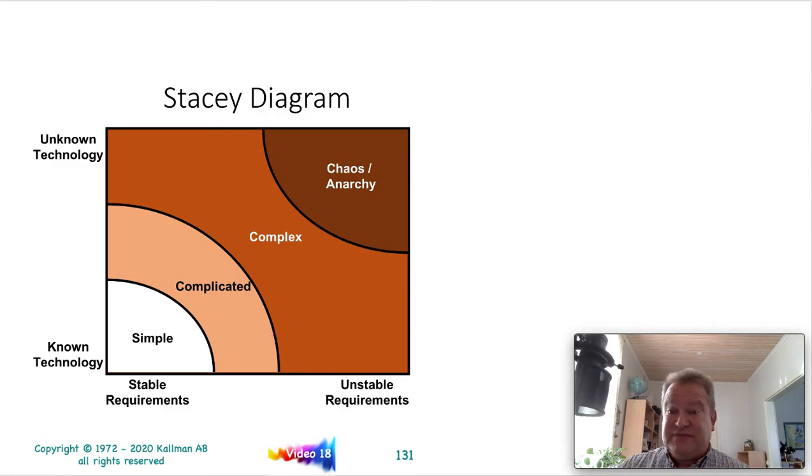This is the Stacey Diagram. This is what I was taught in Scrum by my certified Scrum trainer about 14, 15 years ago. It was taking a look at is the technology unknown or is the technology known? And are the requirements stable or are the requirements unstable or unknown? If you had unstable requirements and unknown technology, that was out with chaos and anarchy out here in the upper right corner. And then you would work your way down into complex and then down to complicated and then eventually to simple.